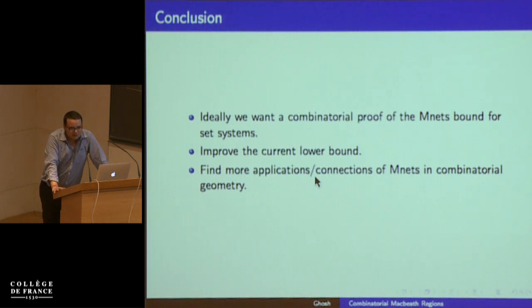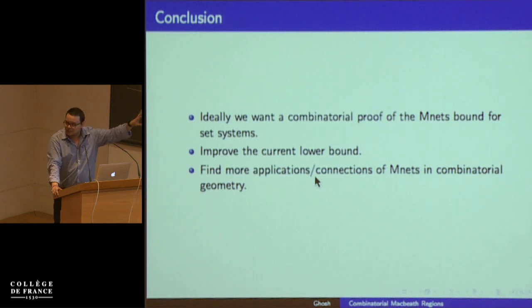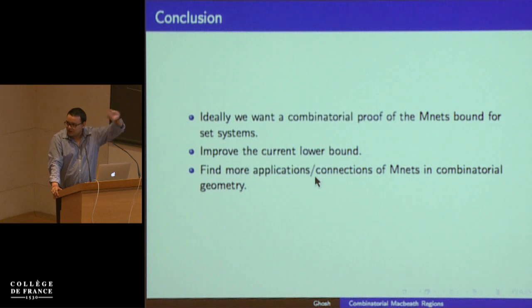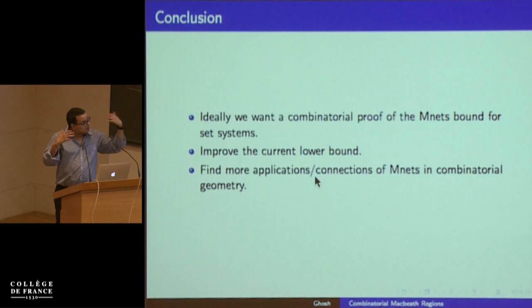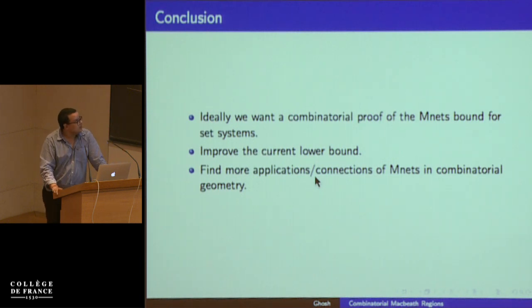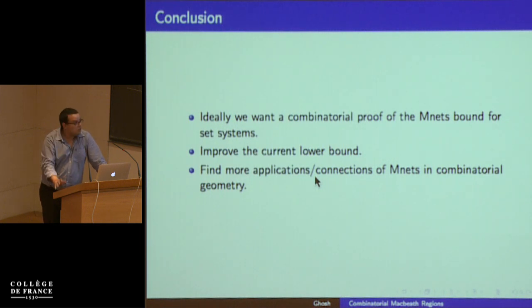Even though, as Mika said, there has been a revolution in algebraic combinatorial geometry, I want a completely synthetic proof that doesn't use algebraic techniques — one where I only assume that the set system has shallow cell complexity and bounded VC dimension and show it has a small M-net. There are also lower bound results in our paper that we want to improve, since there's a gap between the upper and lower bounds. And we want to find more applications of M-nets in combinatorial terms. Thank you.